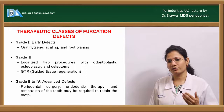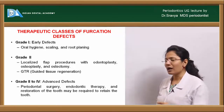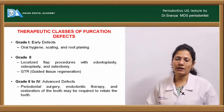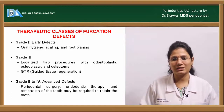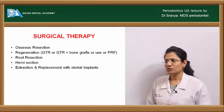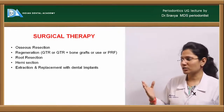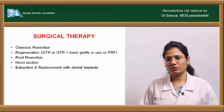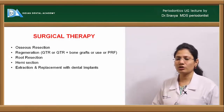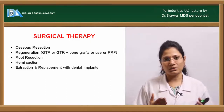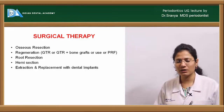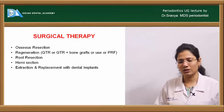Advanced grade two, grade three, and grade four lesions can be treated with periodontal surgery. If prognosis is poor, extraction and implant placement is an option. Surgical techniques include resective osseous surgery, regenerative techniques, and root resection as an alternative modality when regenerative techniques cannot be used.